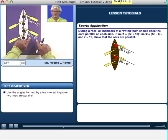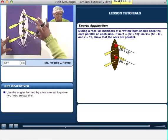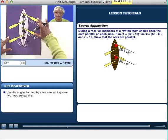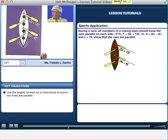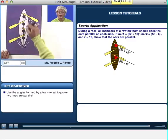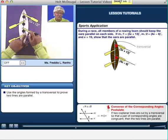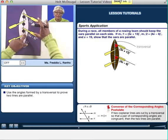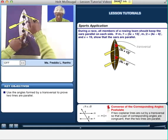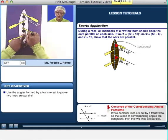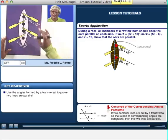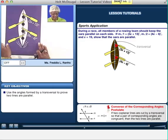We're being asked to show that these oars are parallel. You know what I noticed? That 1 and 2 are corresponding angles. Remember the converse theorem, which says if corresponding angles are congruent, then the lines are parallel. So if we can show that these corresponding angles are congruent, then we can say that these oars are parallel. Let's look to see if we can do that.